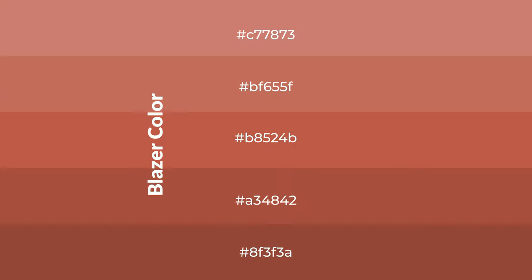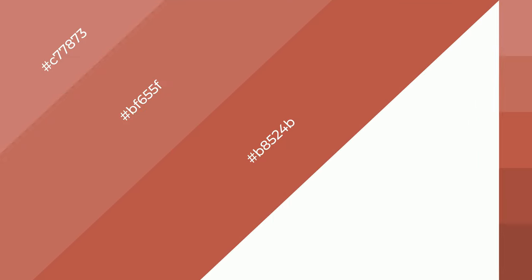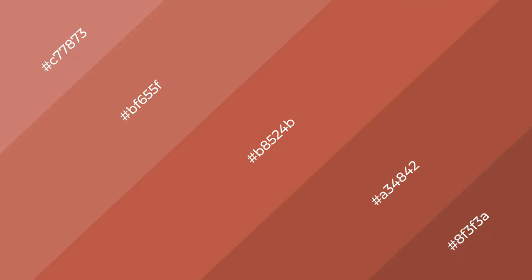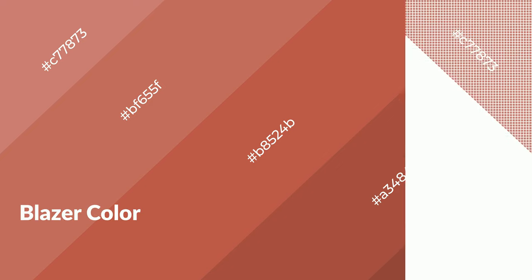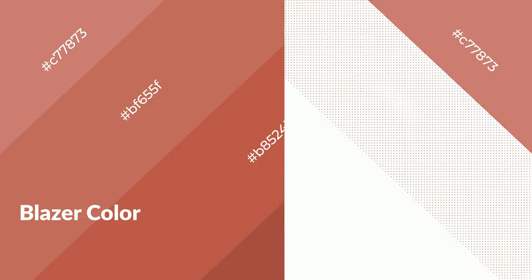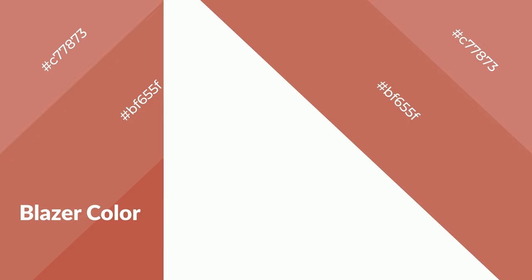Shades are used in patterns, 3D effects, and layers — shades create depth and drama. Blazer is a warm color and it emits cozier and active emotions. Warm colors are symbols of warmth, fire, heat, and sunshine.